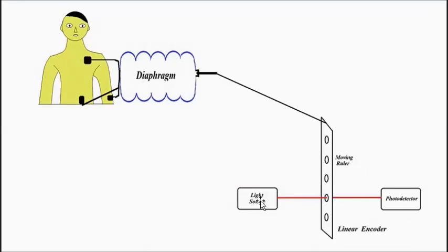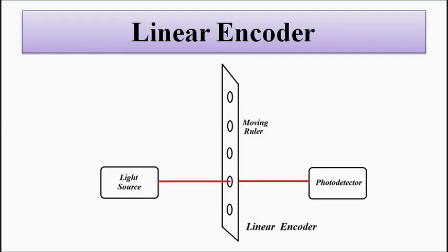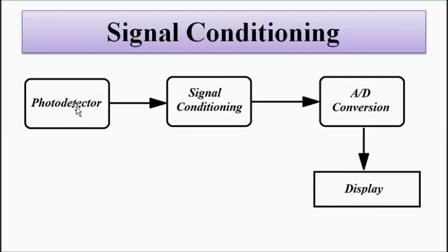So because of that, the light signal will either get blocked or it will be transmitted, which is an indication that pressure fluctuations are happening. And then the signal of the photodetector which it captures, that is then passed through proper signal conditioning circuitry.